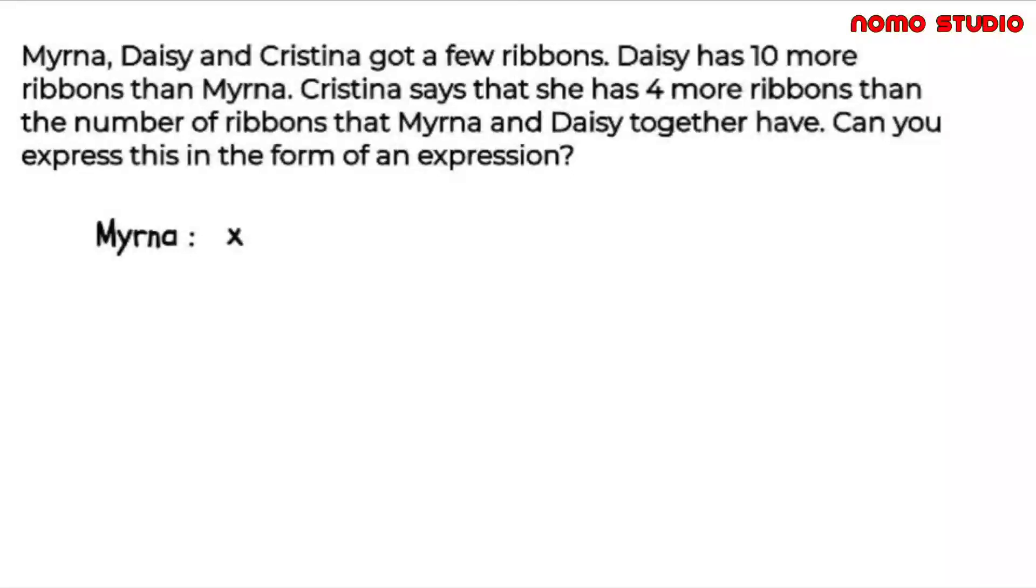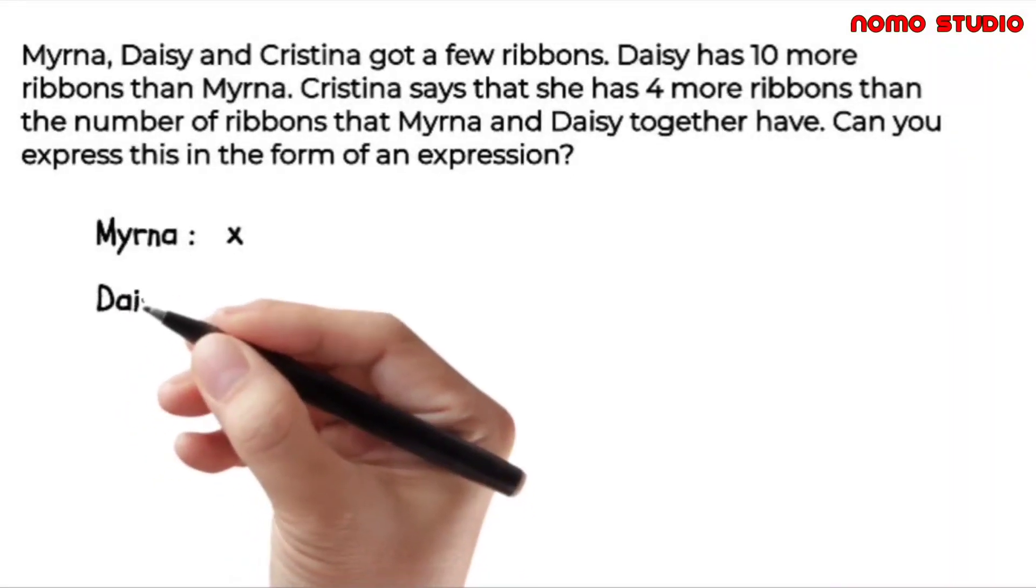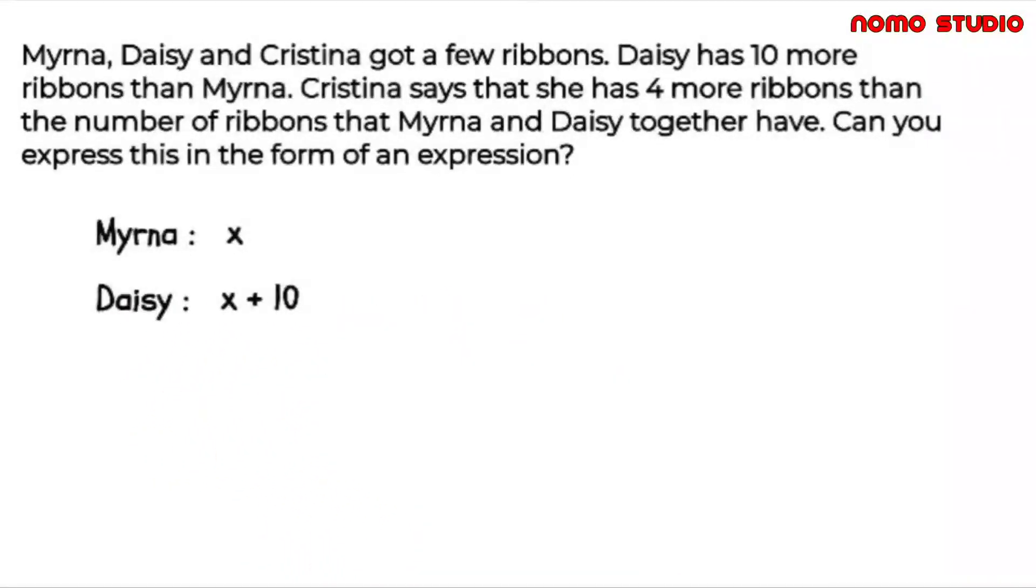Since Daisy has 10 more ribbons than Myrna, we add 10 to the X, which is Myrna's total number of ribbons. Also Christina said that she has 4 more ribbons than Myrna and Daisy together have. Meaning Myrna and Daisy's total number of ribbons plus 4 ribbons.